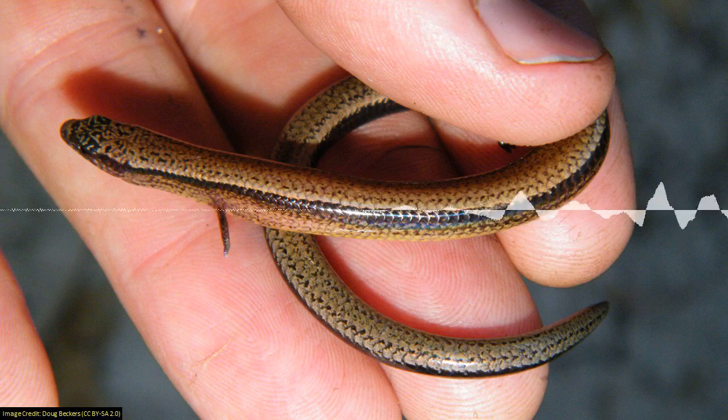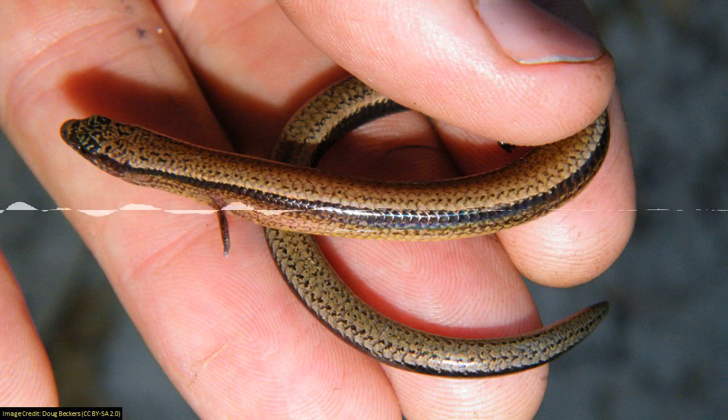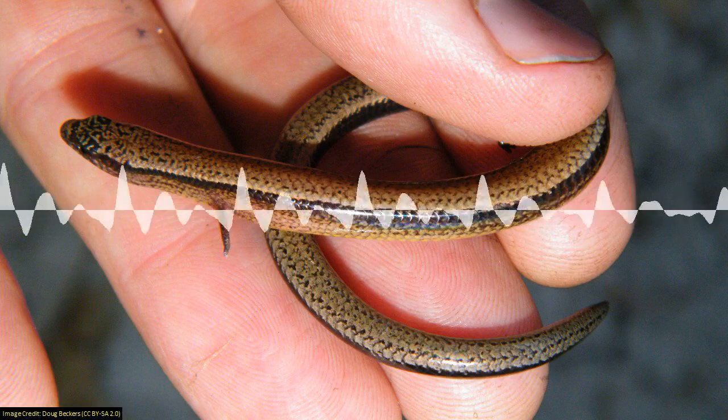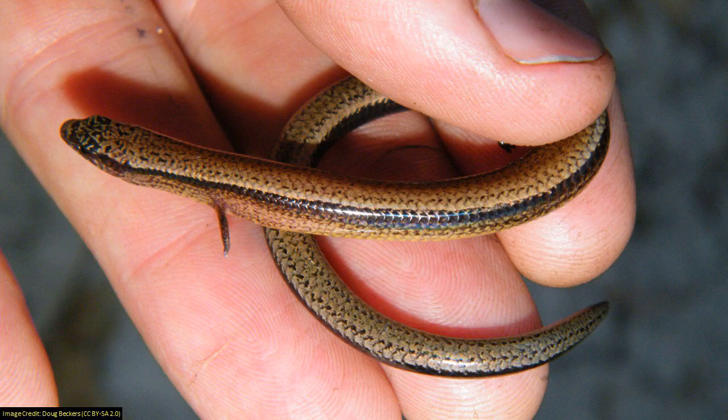But this skink is really interesting because it's really rare. There's over six and a half thousand different species of lizard, but only three of them can lay eggs and give live birth. Two of these species are in Australia and they give us a hint about how live birth might have evolved.